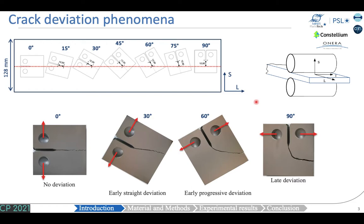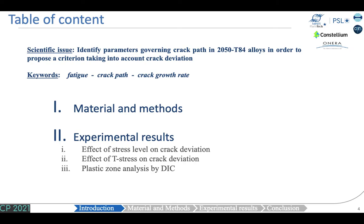In the LS plane, and in some conditions, fatigue crack growth is characterized by a crack deviation. For instance, for specimens oriented at 60 and 90 degrees, the crack tends to realign with the rolling direction despite an unfavorable loading direction. The study aims to identify parameters governing crack path in 2050 aluminium alloys, in order to propose a criterion taking into account crack deviation. I will focus in this presentation on the effect of stress level, T-stress, and plasticity on both crack path and crack growth rate.